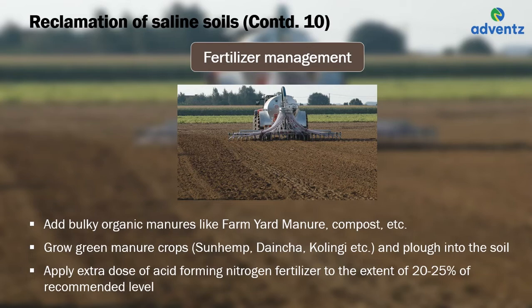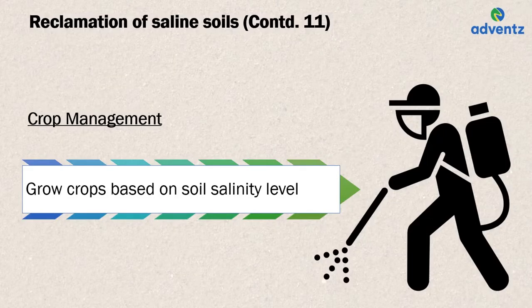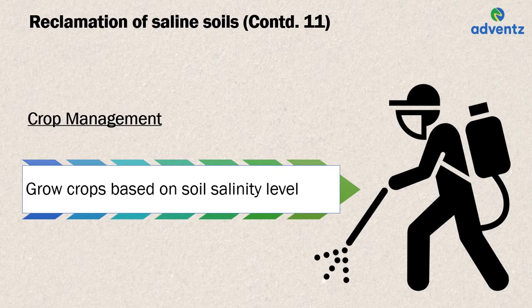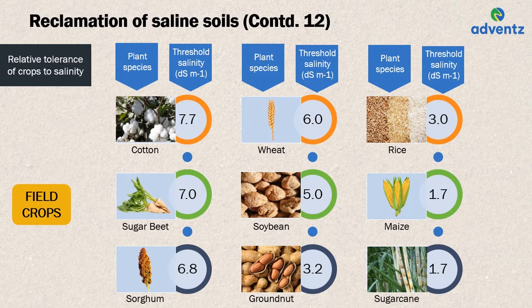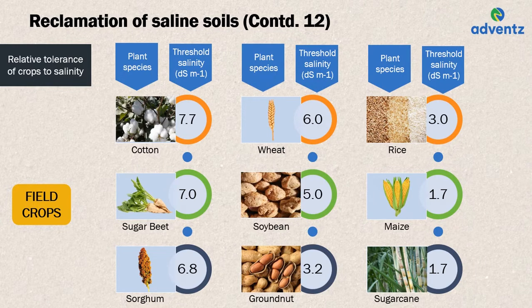Growing crops based on their soil salinity levels also helps in reclamation of saline soils. The relative tolerance of different field crops to salinity: cotton has a threshold of 7.7, sugar beet 7.0, sorghum 6.8, wheat 6.0, soybean 5.0, groundnut 3.2, rice 3.0, maize 1.7, and sugarcane 1.7. Cotton is the most tolerant and sugarcane is the least tolerant. For vegetables: tomato has a tolerance of 2.5, cabbage 1.8, potato 1.7, onion 1.2, and carrot 1.0.